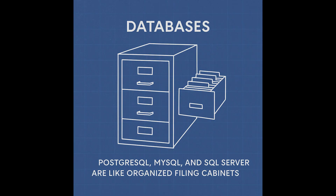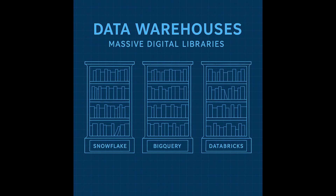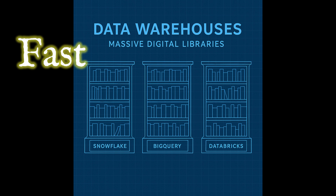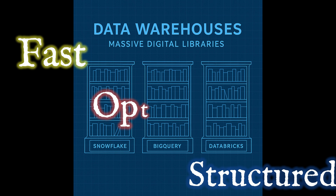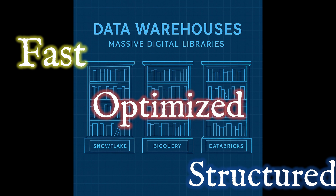Databases like MySQL, Postgres, and SQL Server are like organized filing cabinets, perfect for real-time operations. While we have data warehouses powered by tools like Snowflake, Delta and Databricks, and BigQuery — they are more like massive digital libraries built for analytics: fast, structured, and optimized for long-term reporting. So your app might use Postgres, but your dashboards are probably powered by Snowflake.